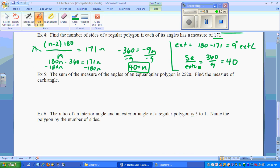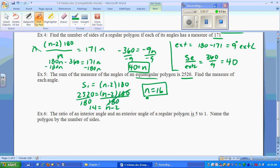For the fifth one here, we have the sum of the measure of the angles of an equiangular polygon, so it's regular, is 2520. Now we have to use the sum of the interior equals N minus 2 times 180. So 2520 equals N minus 2 times 180. Do I want you to distribute that 180? Absolutely not. Divide by 180, giving us that this side ends up being 14, equaling N minus 2. Add the 2 over. So N, the number of sides, is 16.